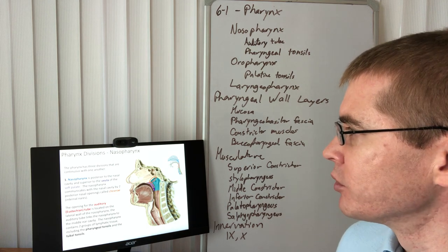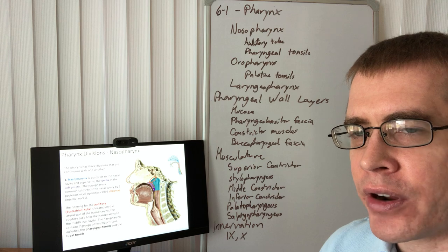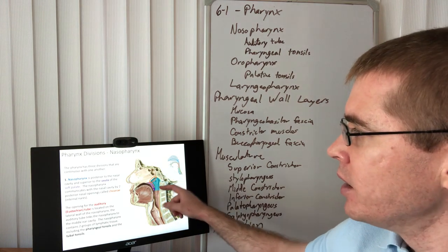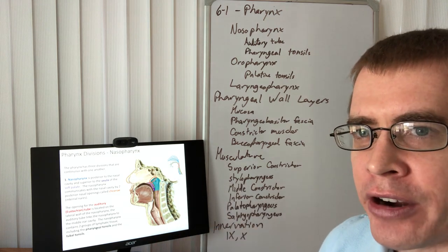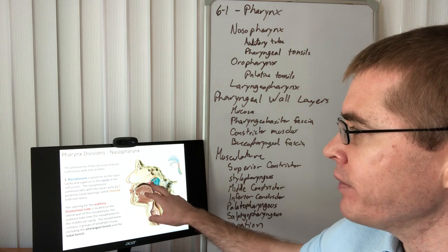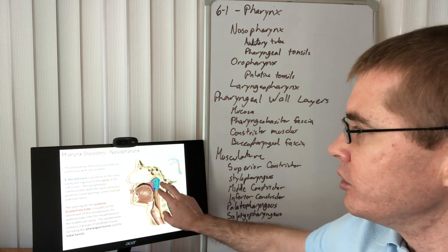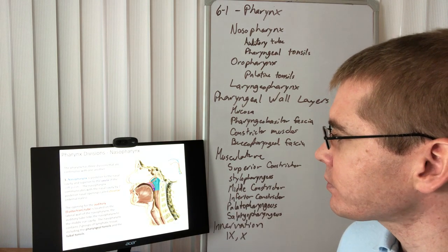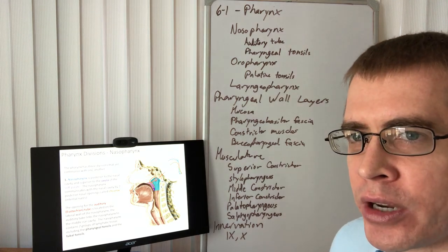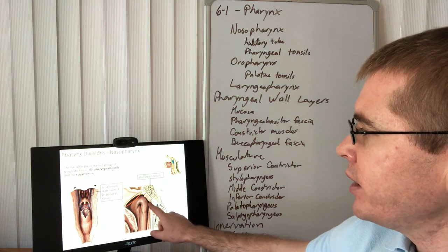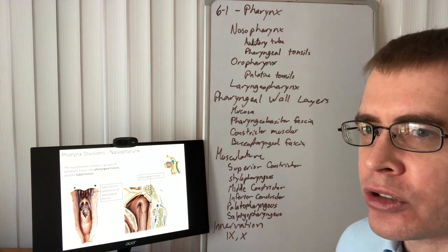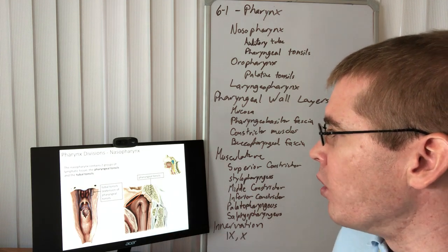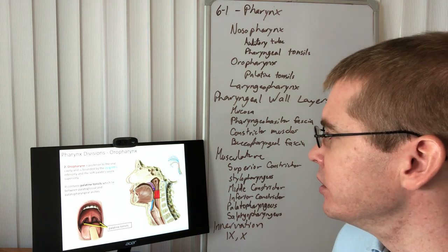At about level C6 of the vertebral column, we divide the pharynx into three portions: the nasopharynx, oropharynx, and laryngopharynx. The nasopharynx is the portion above the soft palate and encompasses everything behind the internal nares or choanae of the nasal cavity. Posterior to that, the nasopharynx contains the auditory tube and the pharyngeal tonsils. There are also tubal tonsils which span the nasopharynx along the lateral walls — more diffuse and not as well defined as the pharyngeal tonsils.